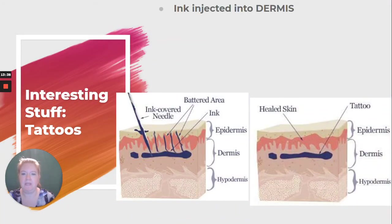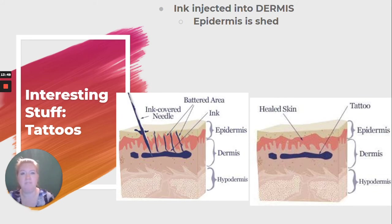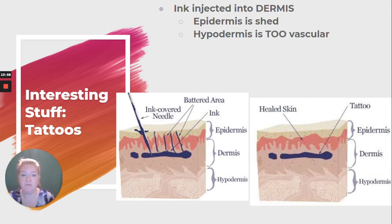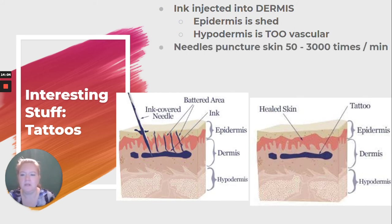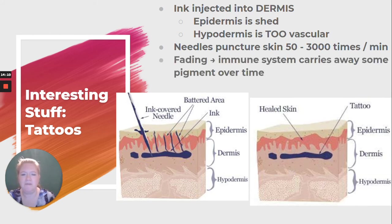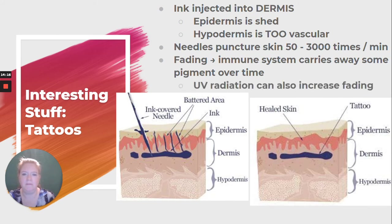Tattoos. The ink is going to be injected into the dermis. The epidermis is shed, so some ink will be in the epidermis and that will get shed as it's replaced. If you want the tattoo to be permanent, it needs to be in the dermis. The hypodermis is too vascular — the ink would just be taken away. The needles puncture the skin 50 to 3,000 times a minute.